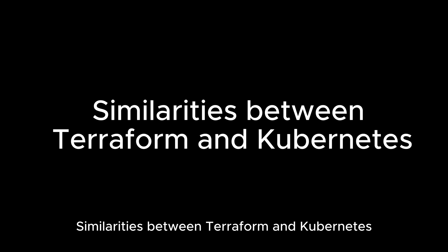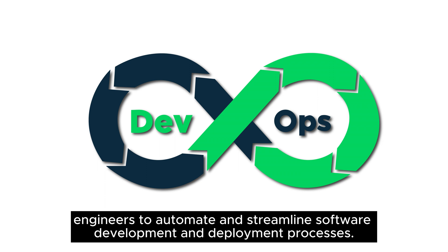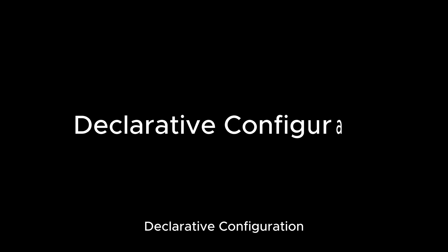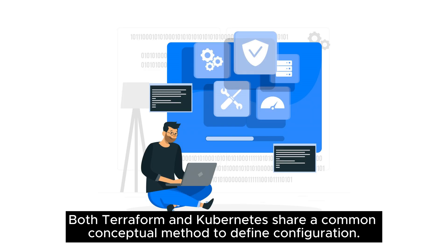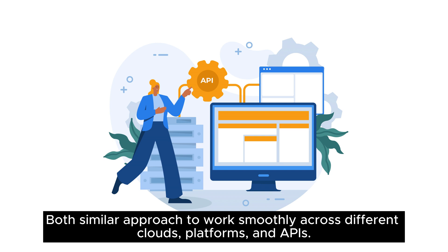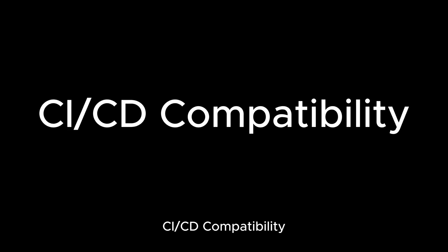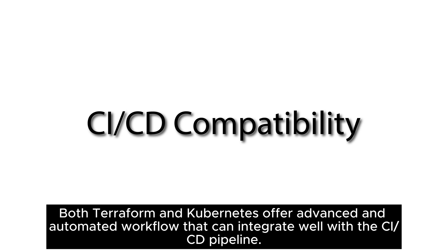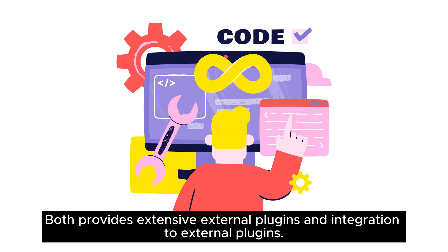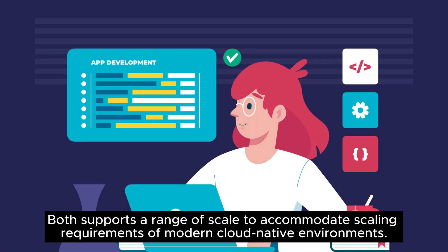Similarities between Terraform and Kubernetes. Both are DevOps tools used by DevOps and cloud engineers to automate and streamline software development and deployment processes. Both share declarative configuration as a common conceptual method. Both are cloud-agnostic and open-source, working smoothly across different clouds, platforms, and APIs. Both use state management logic to ensure configuration files match actual state. Both offer CI/CD compatibility with advanced automated workflows. Both provide extensibility through external plugins, and both support a range of scale to accommodate modern cloud-native environments.